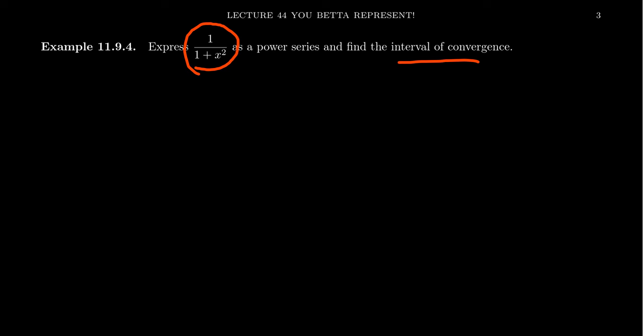The interval of convergence will give us where the rational function equals its power series representation. So we have to play around with the geometric series formula. We get this a over 1 minus r equals our geometric series.